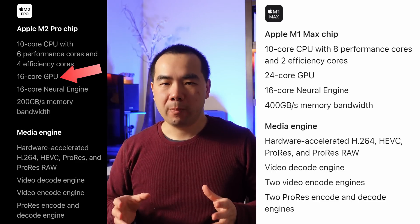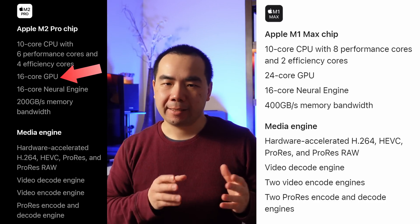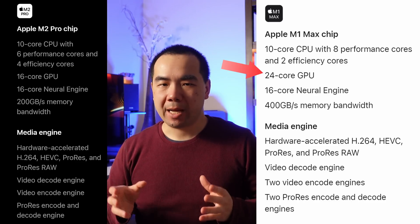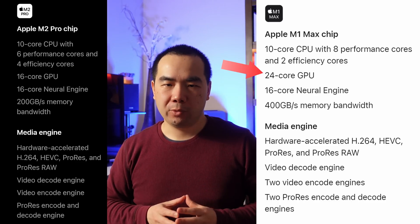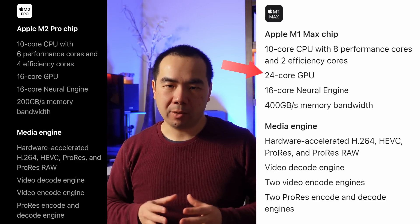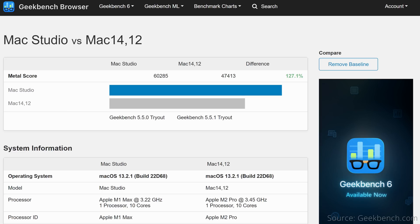The main difference between Max and Pro-level chip designations has always been graphics performance. The M2 Pro Mac Mini has 16 GPU cores, while the M1 Max Mac Studio has 24 GPU cores in the base model. A Geekbench 5 Metal score comparison shows the Mac Studio with a 27% graphics performance advantage over the Mac Mini — although this is just one data point, it gives us a ballpark estimate.